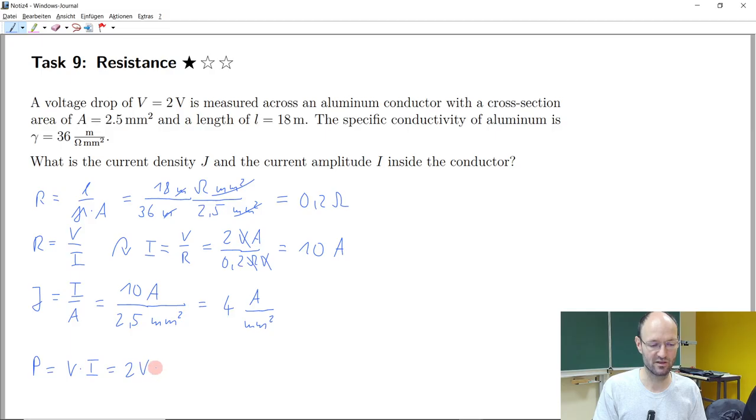And so if we insert these values, we get 2 volts times 10 ampere. So we get 20 watt. And so now 20 watt is the power that is dissipated. Let's say the power that is lost inside the cable and that will heat up the cable.